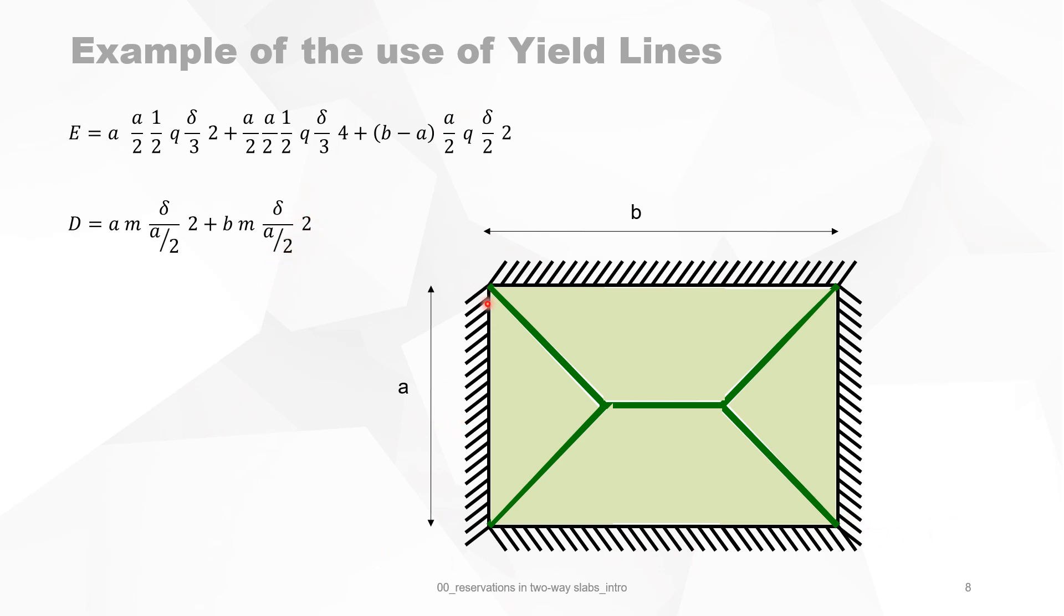And the other side, we have around the rotation axis this and this one. So we have the yield lines projected to the rotation axis, which is A times M, and the rotation angle is delta divided by the maximum distance A/2.